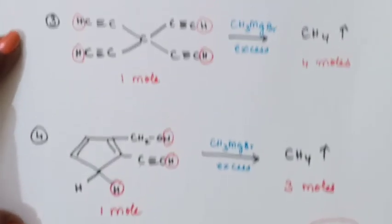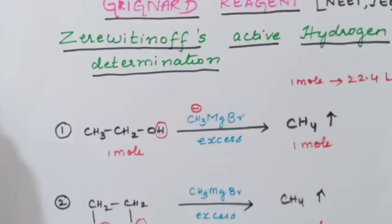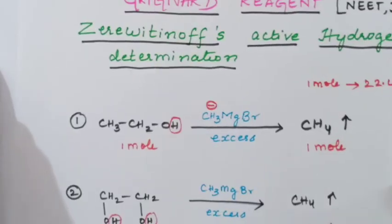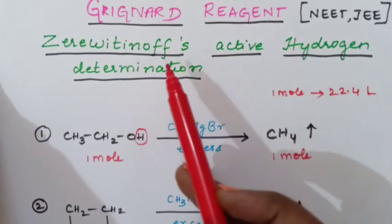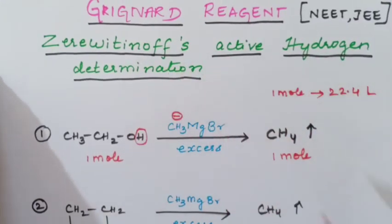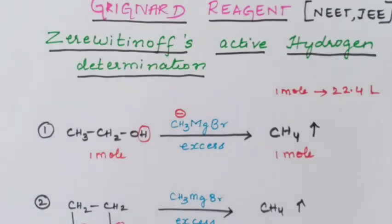This is the method given by the scientist Zerevitinov, called Zerevitinov's active hydrogen determination. I hope the concept is clear to you, students. If you have any doubts, you can write in the comment box. I will meet you in the next video. Bye-bye.